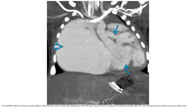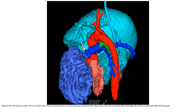Axial cardiac CTA shows massive dilatation of the right atrium with enlargement of the right heart in a patient with Ebstein's anomaly. Note the narrow pulmonary outflow tract. A reformatted cardiac CTA in an infant with Ebstein's anomaly demonstrates subvalvular stenosis, a massively dilated right atrium, and a moderately dilated right ventricle.